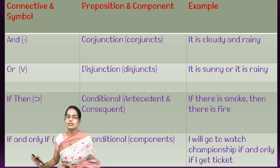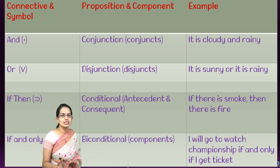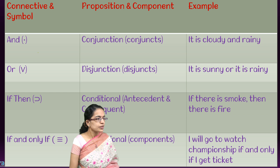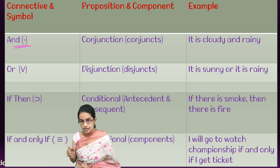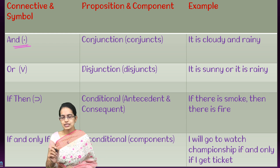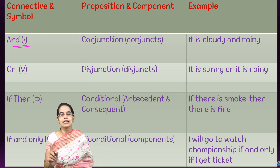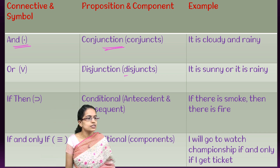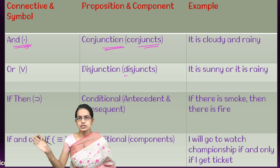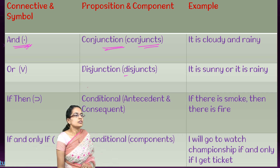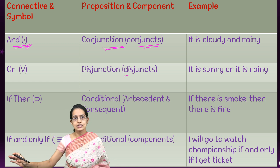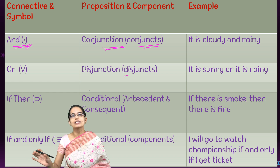This is a complete table to help you memorize the four major truth functional connectives. The first is 'and.' It can be true only when both propositions are true — it is called conjunction, symbolized by a dot, and the independent components are known as conjuncts. For example, 'it is cloudy and it is rainy' — both are true, therefore 'it is cloudy and rainy' is true.